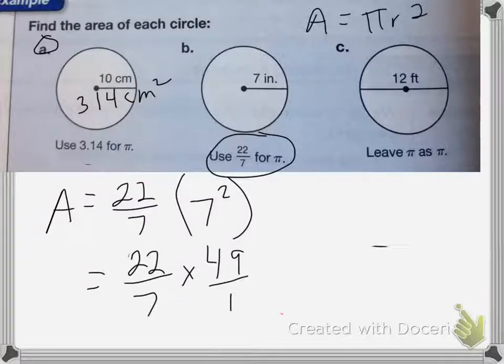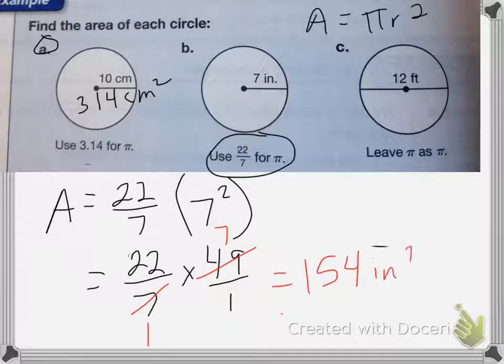And we're going to make it a fraction, so over 1. I can go ahead and cancel – 7 becomes a 1, 49 becomes a 7. So I end up with 22 times 7, which is equal to 154 inches squared.